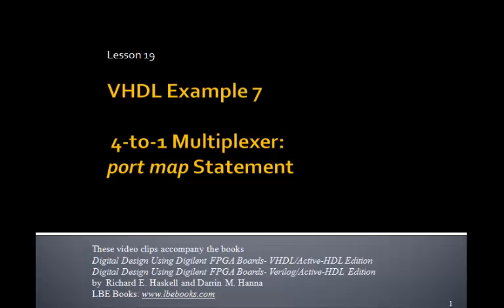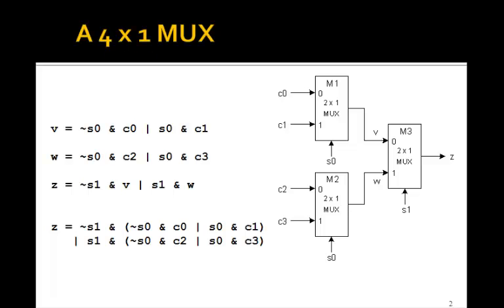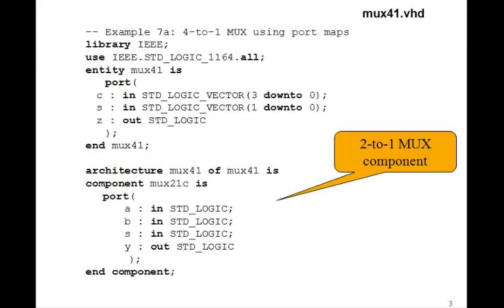This is lesson 19, which is VHDL example 7. In this example, we'll design a 4-to-1 multiplexer. We'll also talk about the port map statement. You remember from example 17, we saw that we could design a 4-to-1 mux out of three 2-to-1 muxes. We just saw how we could make a component for a 2-to-1 mux in the last example, so let's see how we can make a 4-to-1 mux using that component.